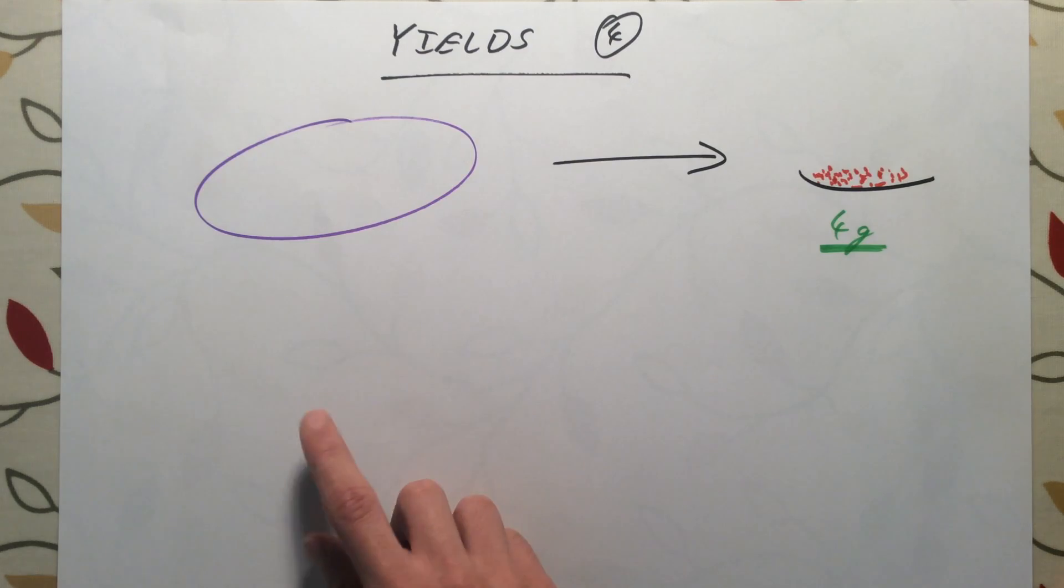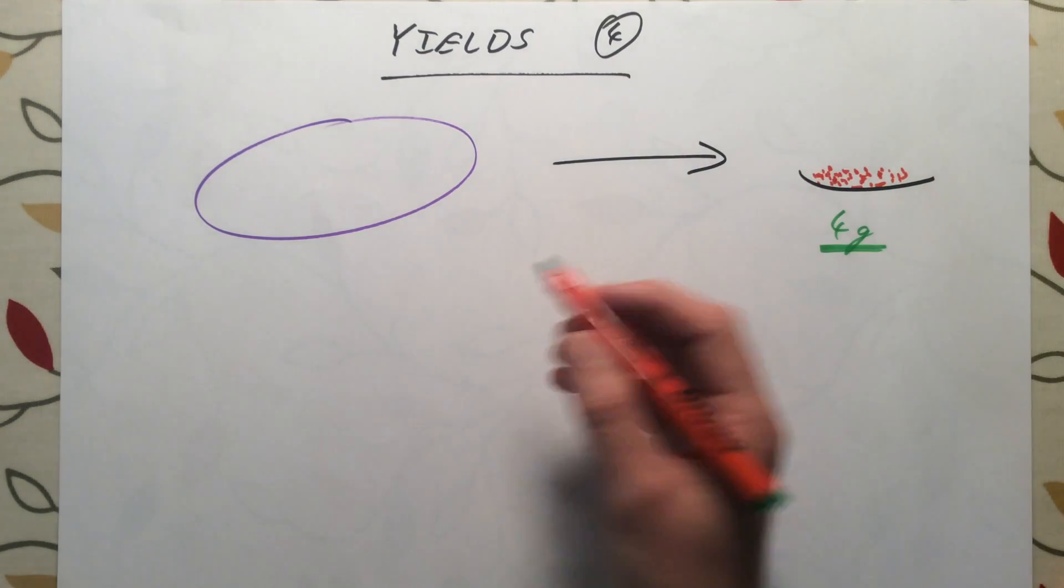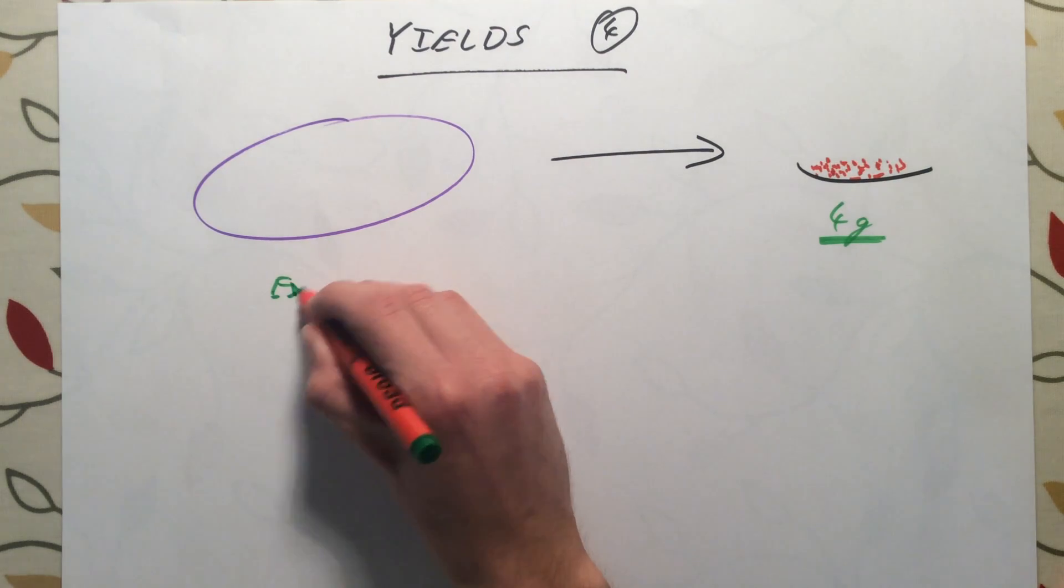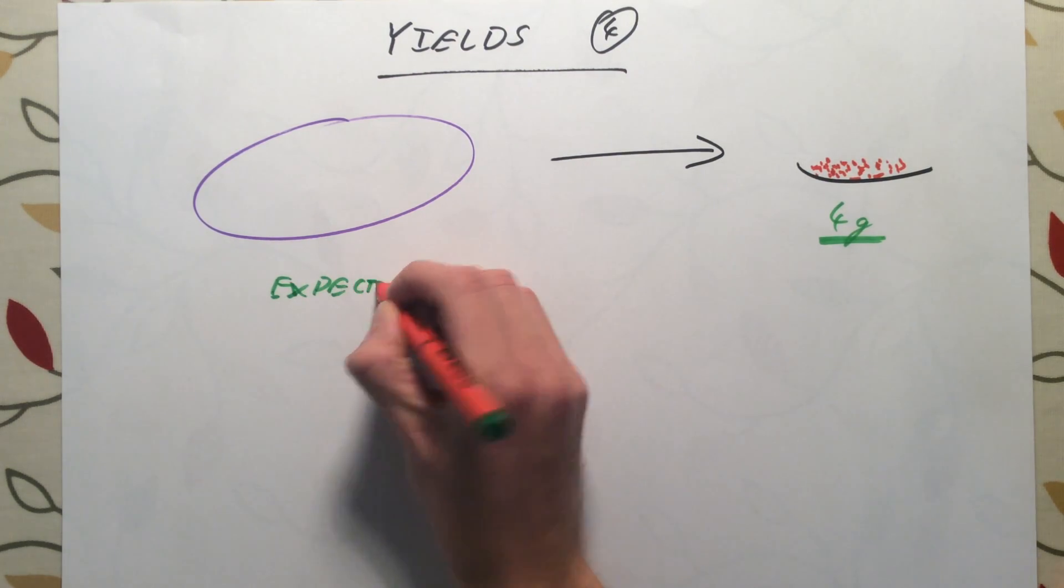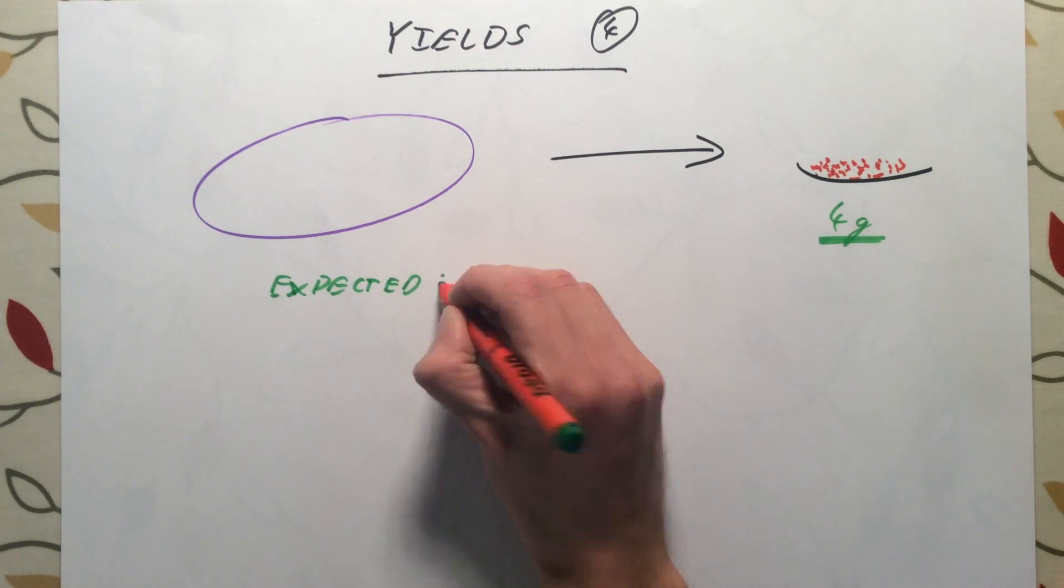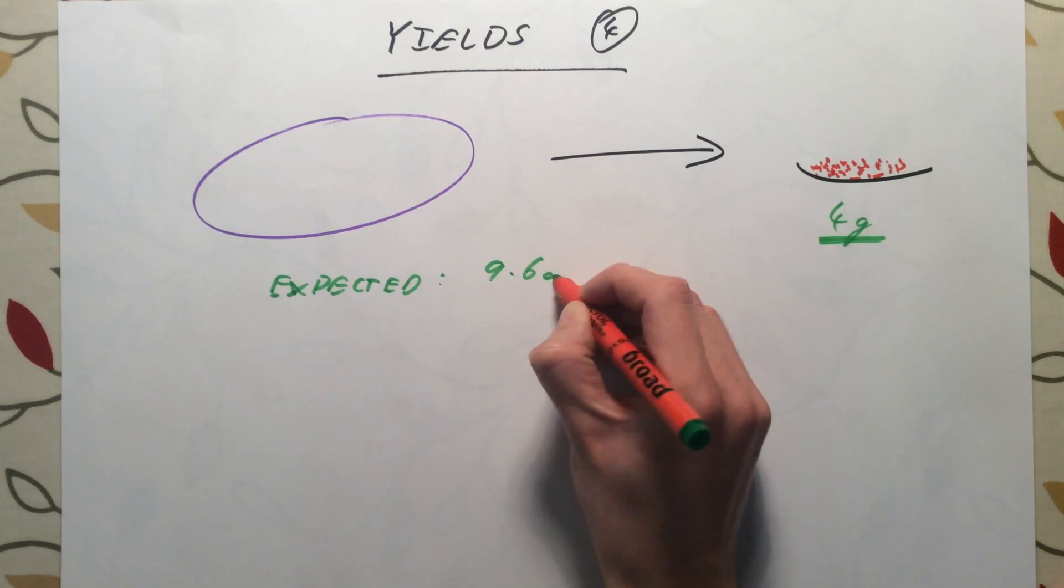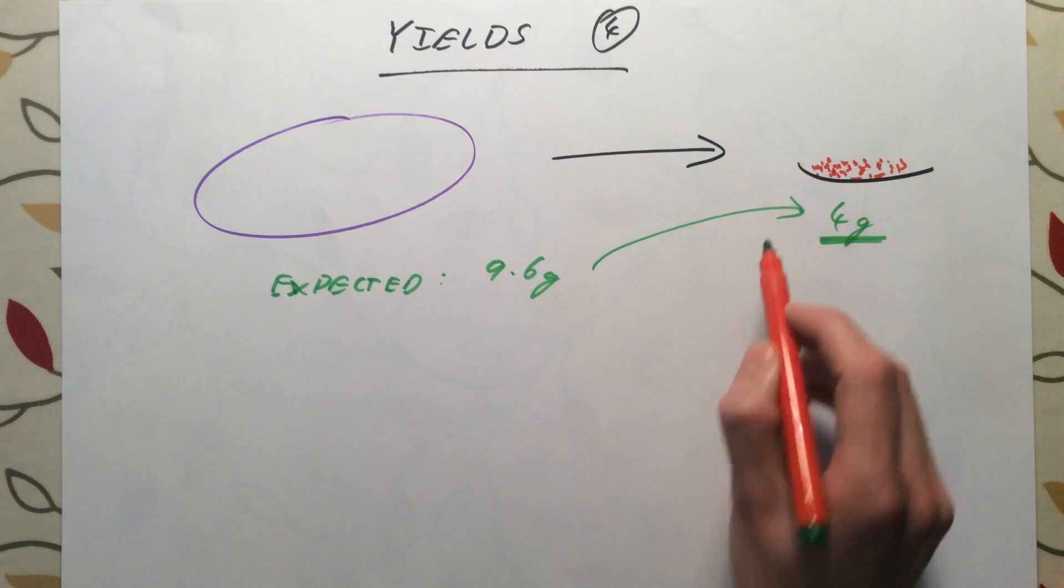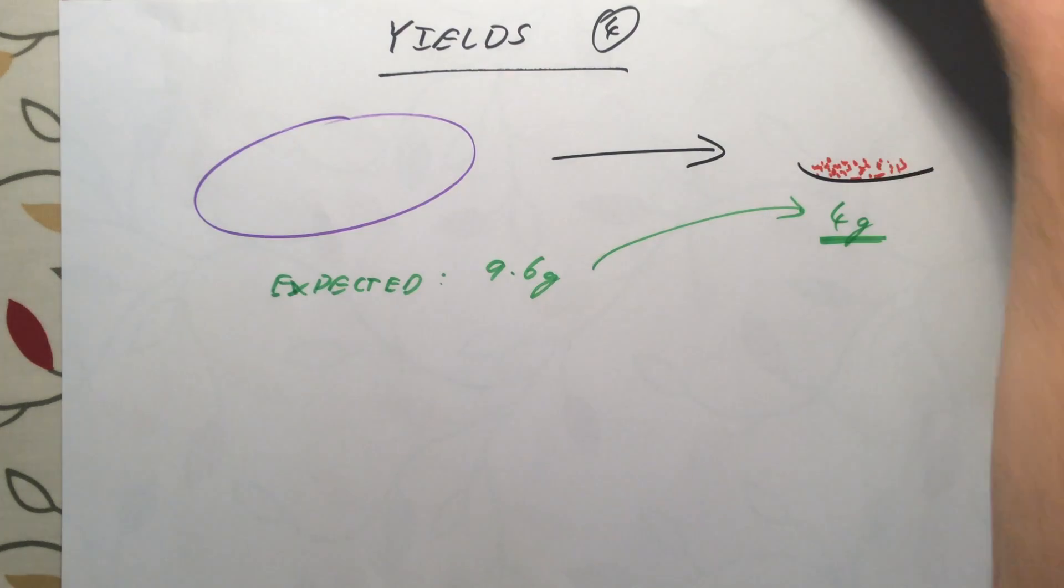Let's say in this reaction our expected yield, or we expected to make 9.6 grams, but we actually only got four grams out at the end. We need to be able to work out the percentage yield for this reaction.